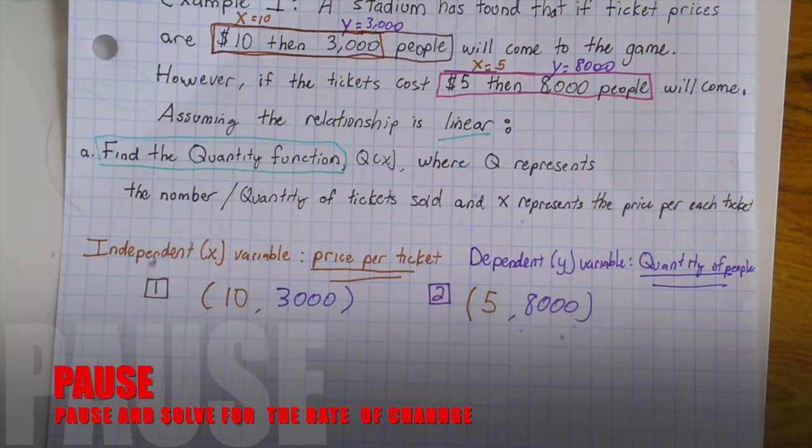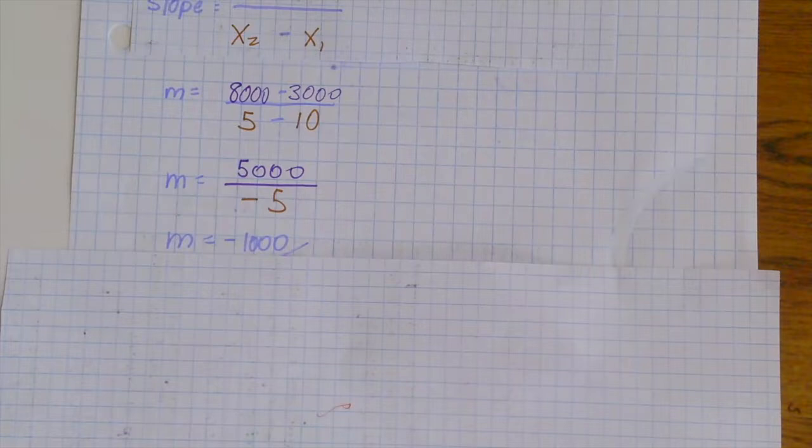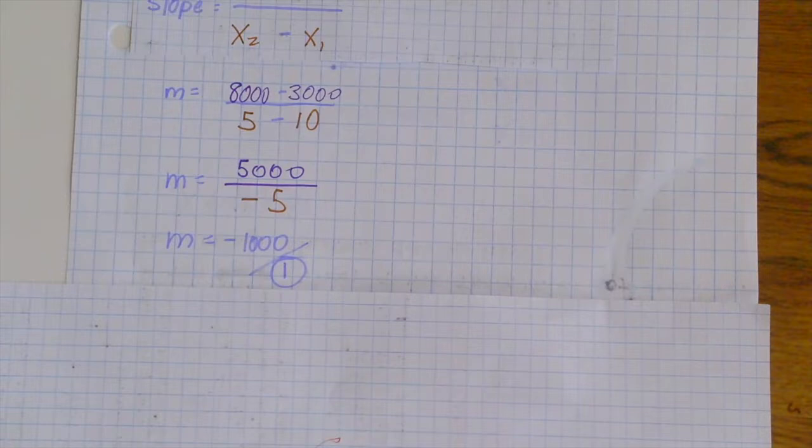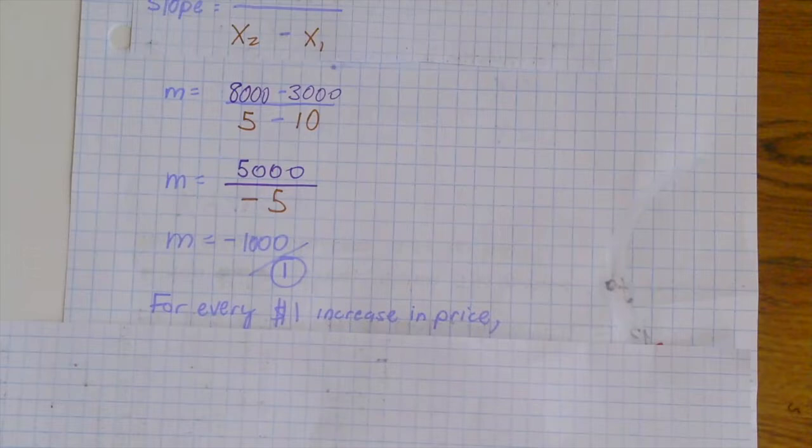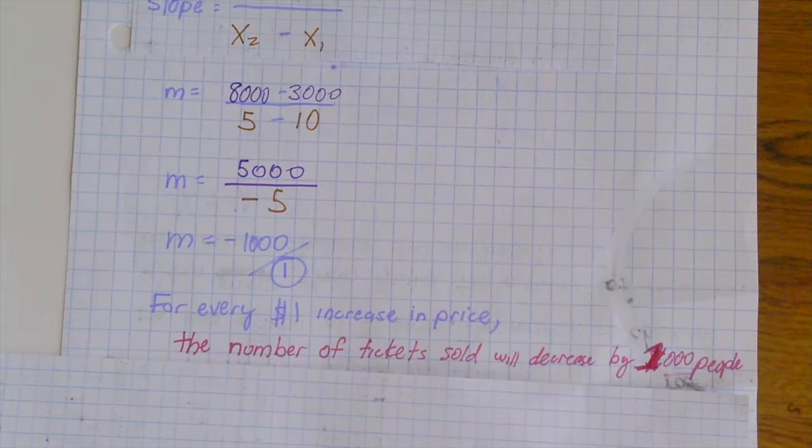Now that we have calculated slope to be negative 1,000, we have to create it into a fraction to give it some additional context in regards to the word problem. What that means is, for every $1 increase in price, the number of tickets sold will decrease by 1,000 people. Please have this in your notes.